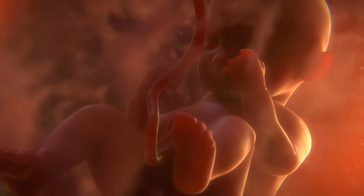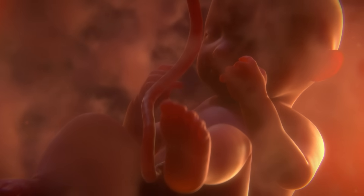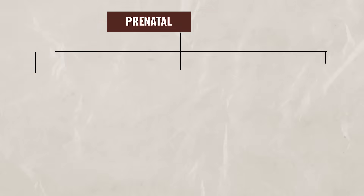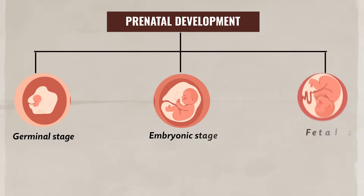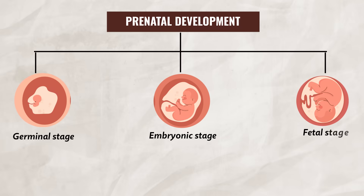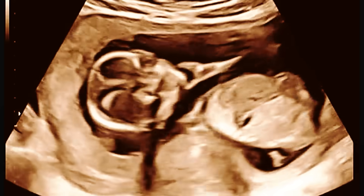Now, during prenatal development, the body and brain undergo rapid growth and formation. This happens in three main stages: the germinal stage, the embryonic stage, and the fetal stage, which for AP Psychology you do not need to know about as they're outside the scope of the class. However, even though you do not need to know the stages, you do need to understand how different factors can influence prenatal development.